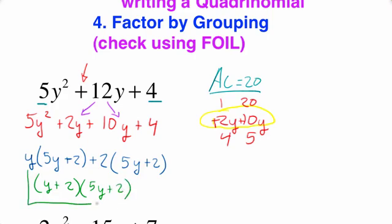That is our final answer. Now we can check this using FOIL: y times 5y is 5y squared; y times 2 is 2y; 5y times 2 is 10y; 10y plus 2y is 12y; and lastly 2 times 2 is 4. So our answer checks out using FOIL.